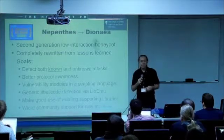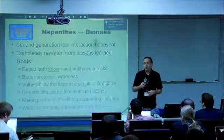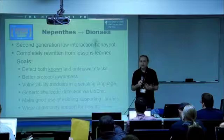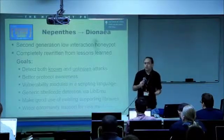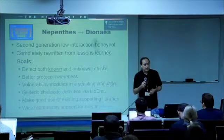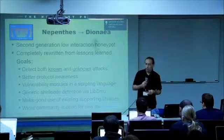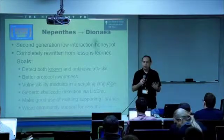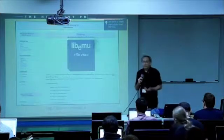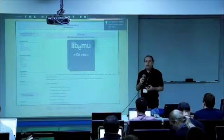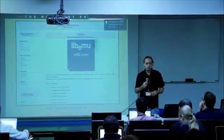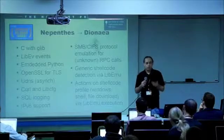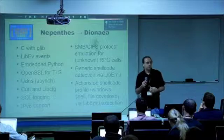Our replacement for Nepenthes is called Diannea. This is a second-generation low-interaction server honeypot. The goal was to start from scratch, take the lessons we learned, and build the ability to capture new attacks — dynamically detecting new attacks and different methods we haven't seen before. To do that, we need a better awareness of the protocol. We also want to make it much easier for people to write their own vulnerability modules using a scripting language rather than C++. And we wanted to detect shellcode generically using a library called lib-emu — an x86 emulator running in a small library that can detect the presence of shellcode.